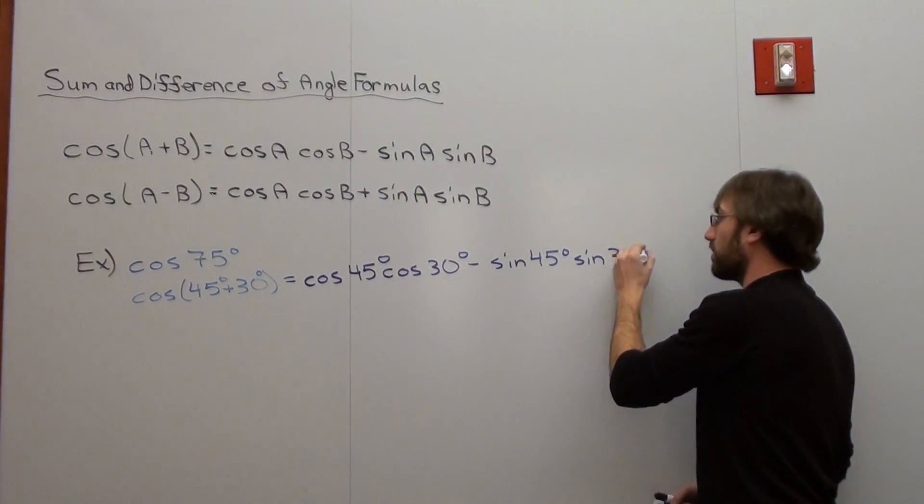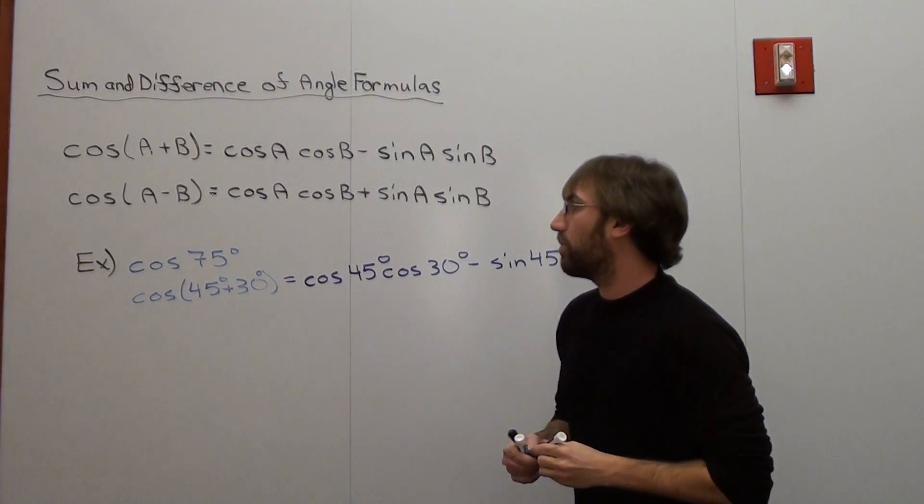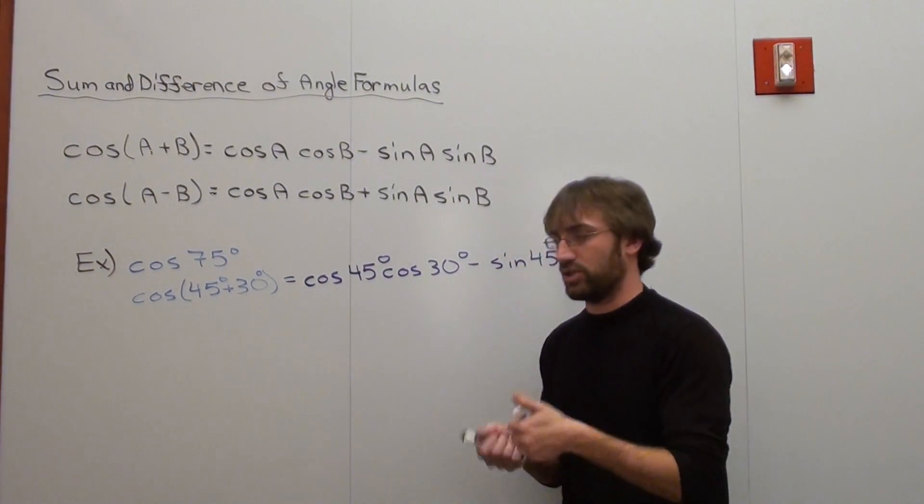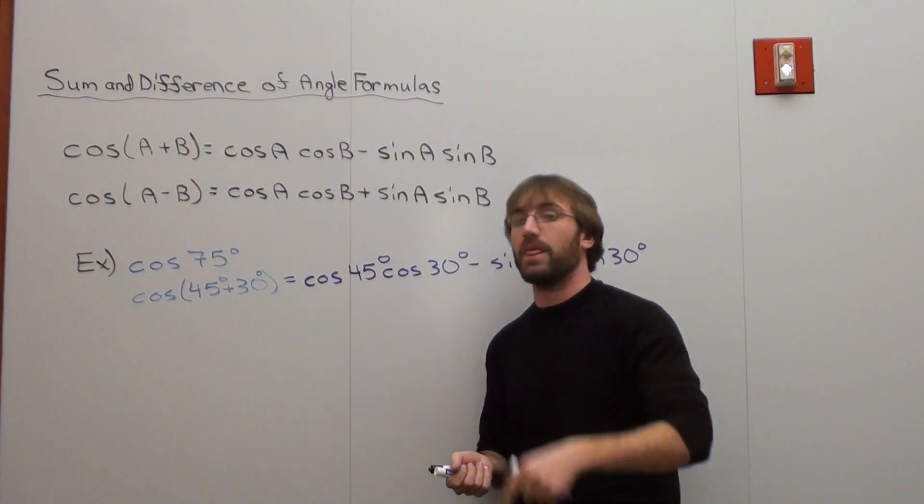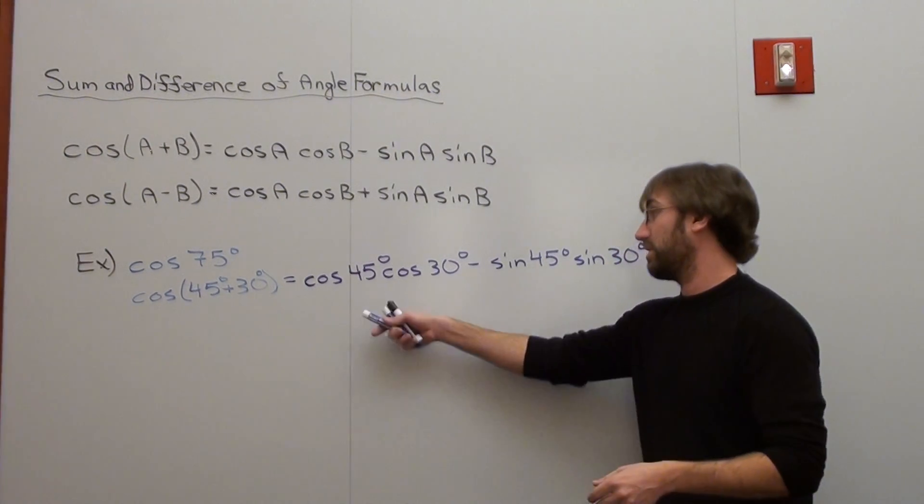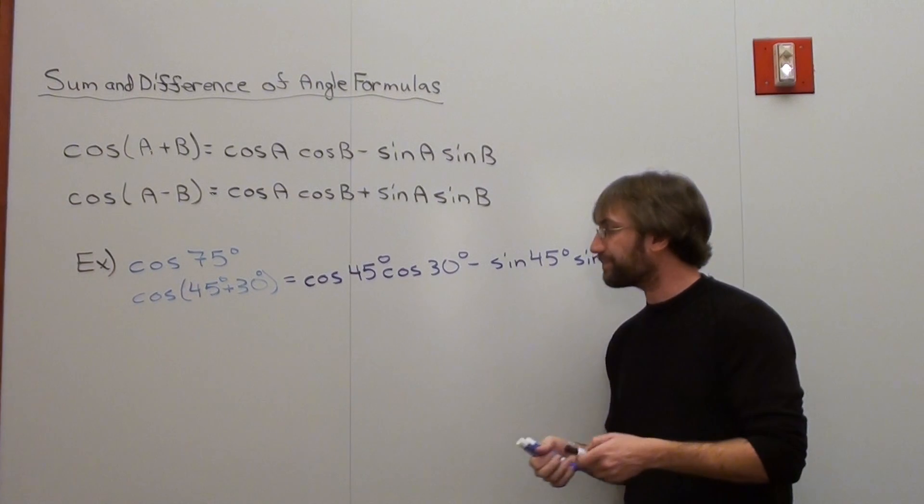Now that's really cool because I don't know, like I said, what the cosine of 75 degrees is, but this formula will allow. Well, I could just plug into a calculator. I agree. But if your teacher asks for an exact value, you've got to be able to do an exact value, extracting information that you already know.